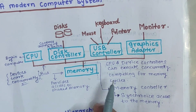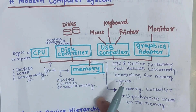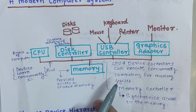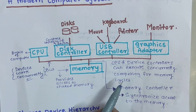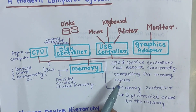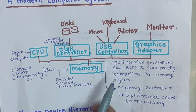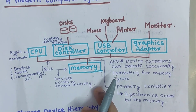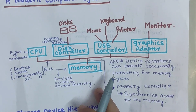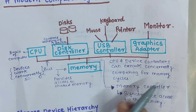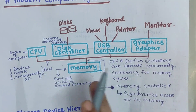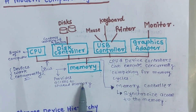It is said that your computer works faster whenever the size of RAM is higher. This is because processing will be faster if the size of RAM is larger. This is a basic overview of a modern computer system.